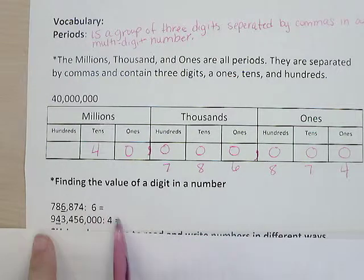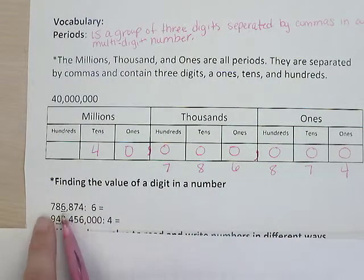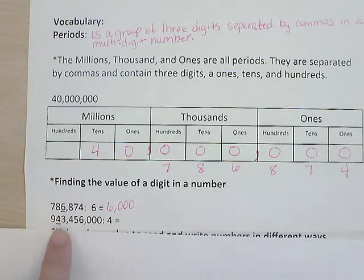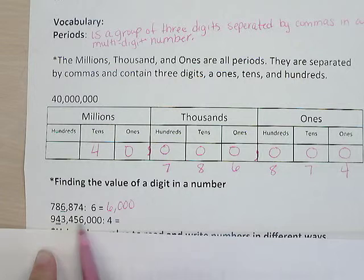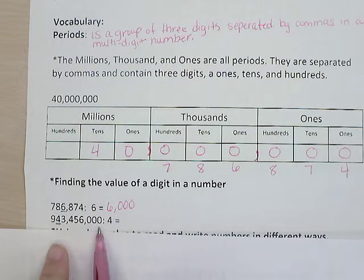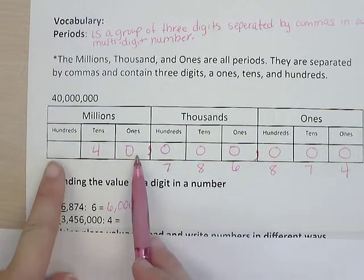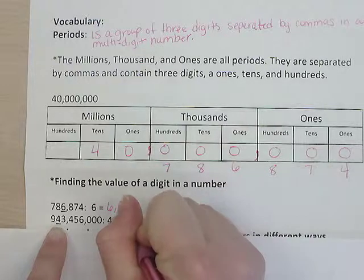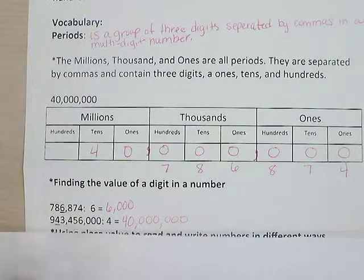So what we're going to do is we're going to find the value of these two numbers. So if I'm looking here, this six falls into my thousands place. So the value of my six is six thousands. So this is the value of the six. And if I were to look here, my next number is 943,456,000. And they want to know what is the value of the underlined four. This is my ones period, my thousands period, my millions period. So if I were to put this up into my millions period, the nine would be 900 millions. The four's in the tens would be 40 millions. So I would write my four. And then the value of my four would be 40 millions.